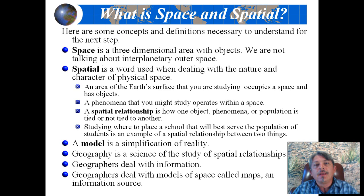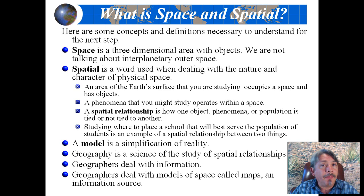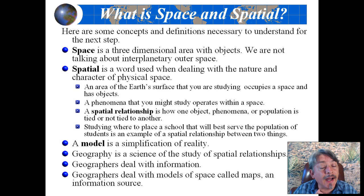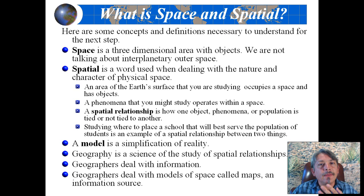Space is a three-dimensional area with objects. You can think about outer space, but think of space differently when you talk about geography — it is basically any three-dimensional area with objects that are in it. We use the word 'spatial,' spelled with a T. It is a word dealing with the nature and character of physical space. An area of the Earth's surface that you are studying occupies a particular space with objects on it, such as clouds in the sky, aircraft moving passengers, forests on mountain slopes, or rivers moving water through a valley.